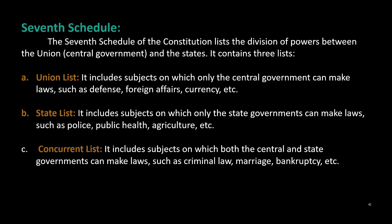State List: It includes subjects on which only the state governments can make laws, such as police, public health, agriculture, etc. Concurrent List: It includes subjects on which both the central and state governments can make laws, such as criminal law, marriage, bankruptcy, etc.